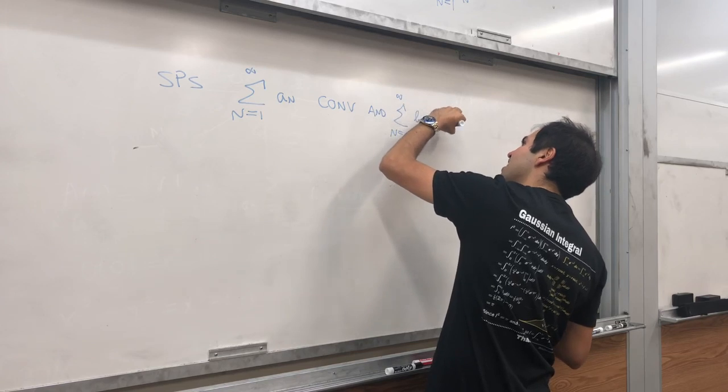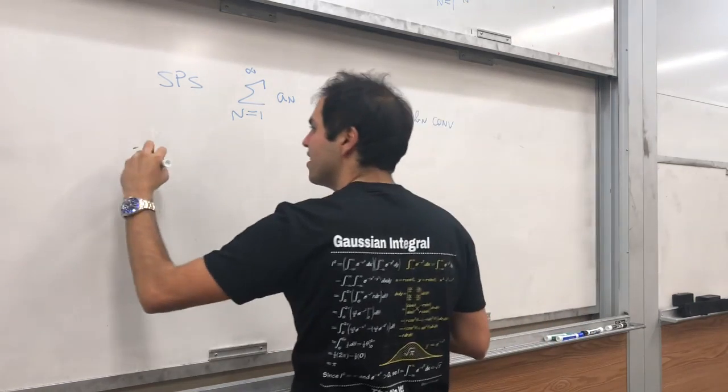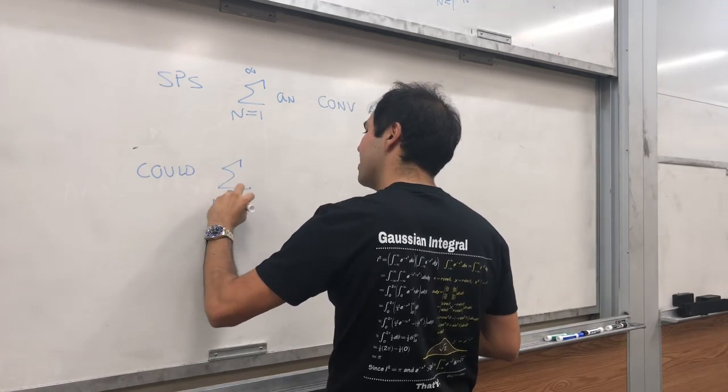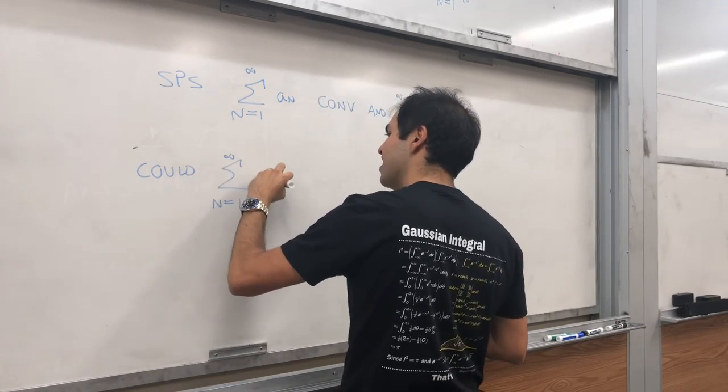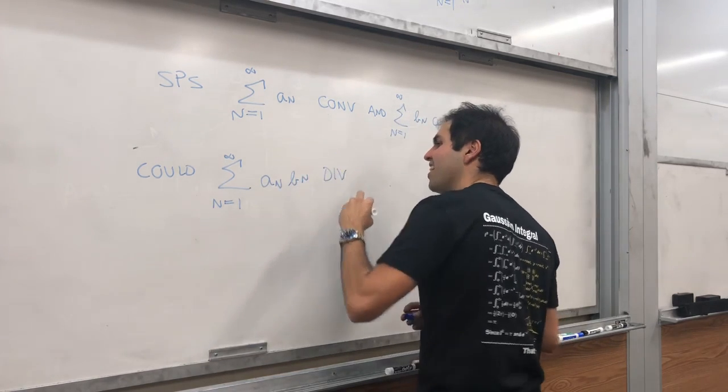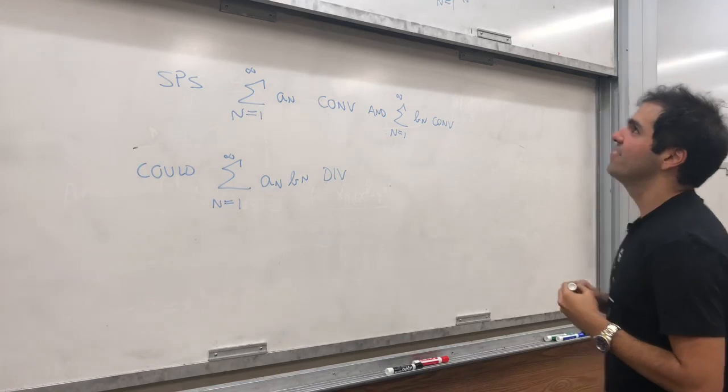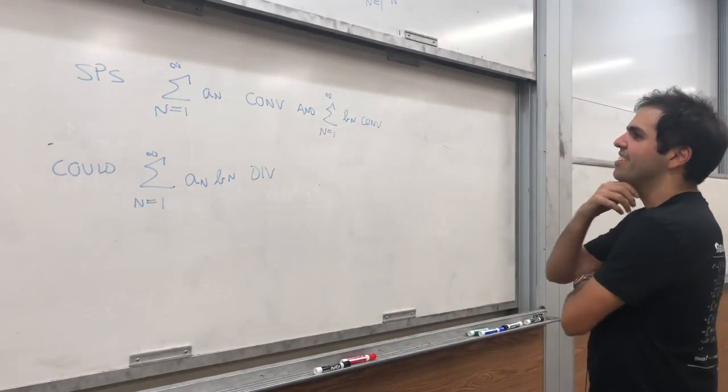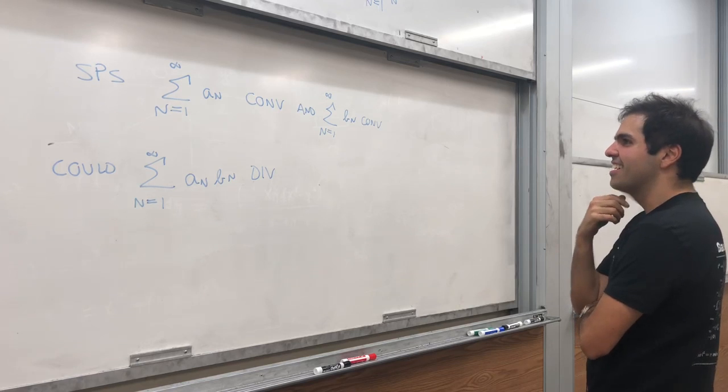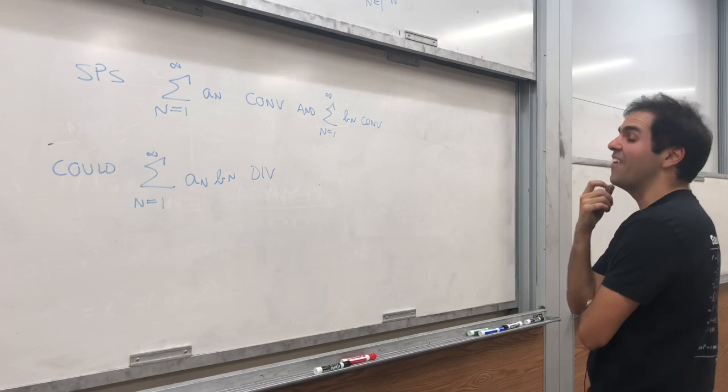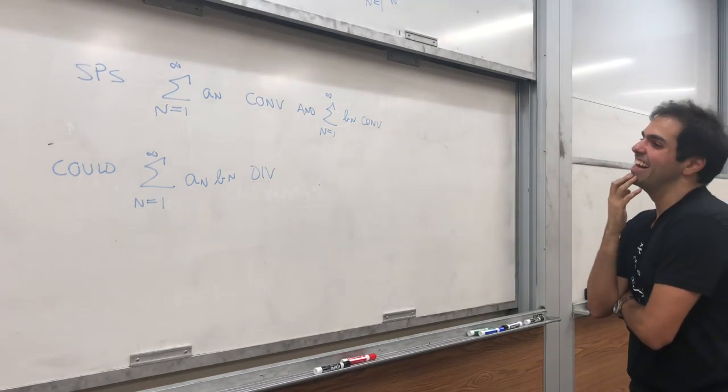Is it possible to have the series as n goes from 1 to infinity, a_n b_n to be divergent. Let me think.